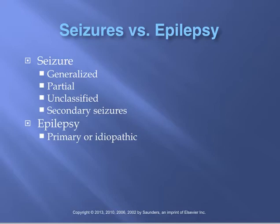Generalized seizures are typically tonic-clonic or absence seizures. Tonic-clonic seizures, formerly called grand mal, are characterized by generalized alternating muscle spasms and jerkiness — the tonic phase is the stiffening and the clonic phase is the rhythmic jerking. Absence seizures, formerly called petit mal, are a brief loss of consciousness where the patient appears to be blankly staring, as if daydreaming.